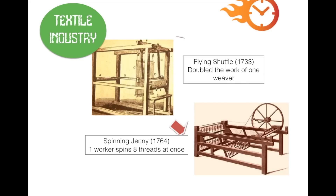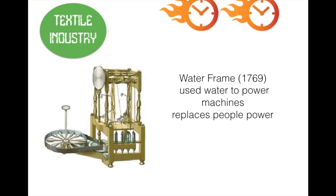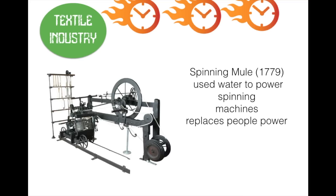A series of inventions are developed to speed up textile production. The flying shuttle in 1733 doubles the work of the weaver, creating increased demand for thread. The spinning Jenny in 1764 spins eight threads at once. To address the need for a better power source, the water frame, invented in 1769, hooks up to the spinning Jenny or power loom and is run by a water wheel. Though water power isn't fully efficient, it's faster than people. The spinning mule further advances the process using water power.